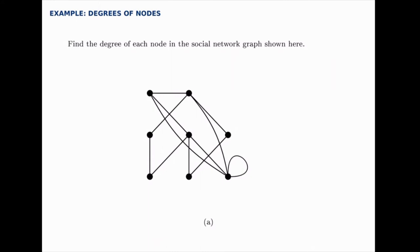Here we have an undirected multigraph, and we're looking for the degree of each node in this graph. So let's start up here at the upper left and count how many edges connect to that node. There's 1, 2, 3, so the degree at that node would be 3.